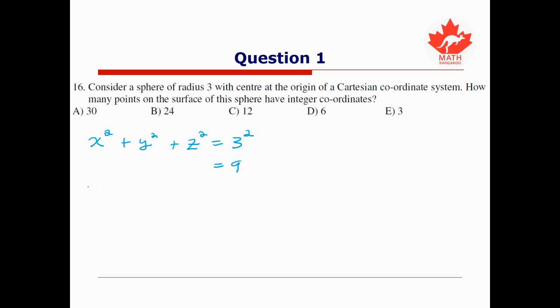Well one thing we can do is start writing out some of the squares. So 0² is 0, 1² is 1, 2² is 4, 3² is 9 as we just saw above, 4² is 16, and so on.